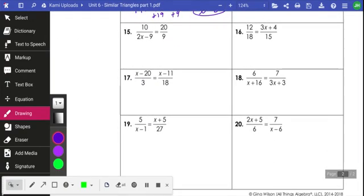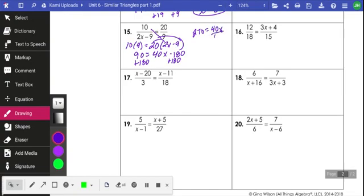So number 15. We'll have 10 times 9 for our cross product is equal to 20 times (2x minus 9). So I'll have 90 is equal to, distribute the 20, 40x minus 180. And then I will add the 180 to both sides so that I have 270 is equal to 40x. Divide both sides by 40 so that x is equal to 6.75.